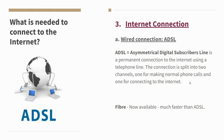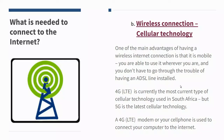Fiber is much faster, offering speeds of 10 or 20 megabits per second, and is available in most areas of the Western Cape. For wireless connections, we consider cellular technology. One of the main advantages of wireless Internet is mobility — you can take it wherever you are without installing ADSL or fiber. 4G or LTE is currently the most common cellular technology in South Africa, with 5G slowly rolling out. A 4G modem or cell phone is used to connect your computer to the Internet.